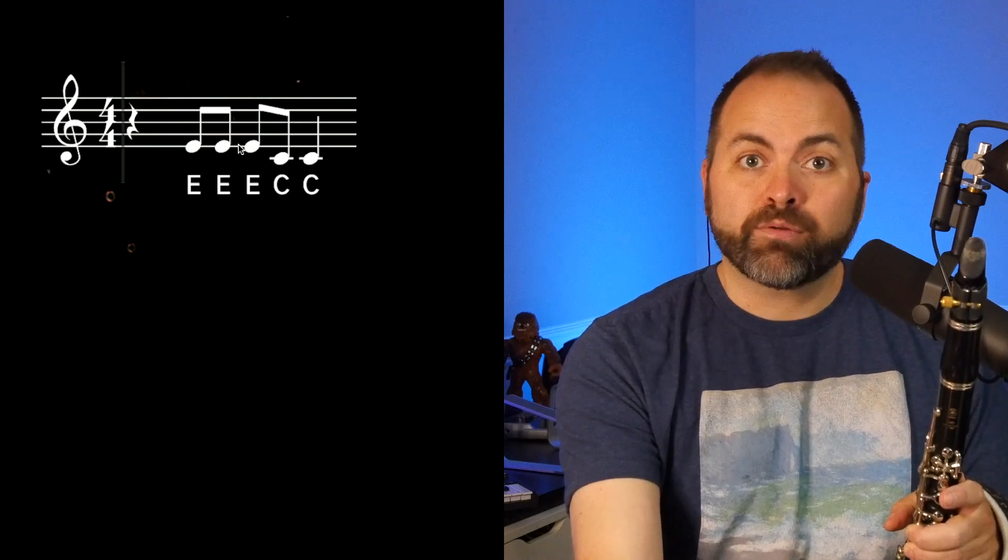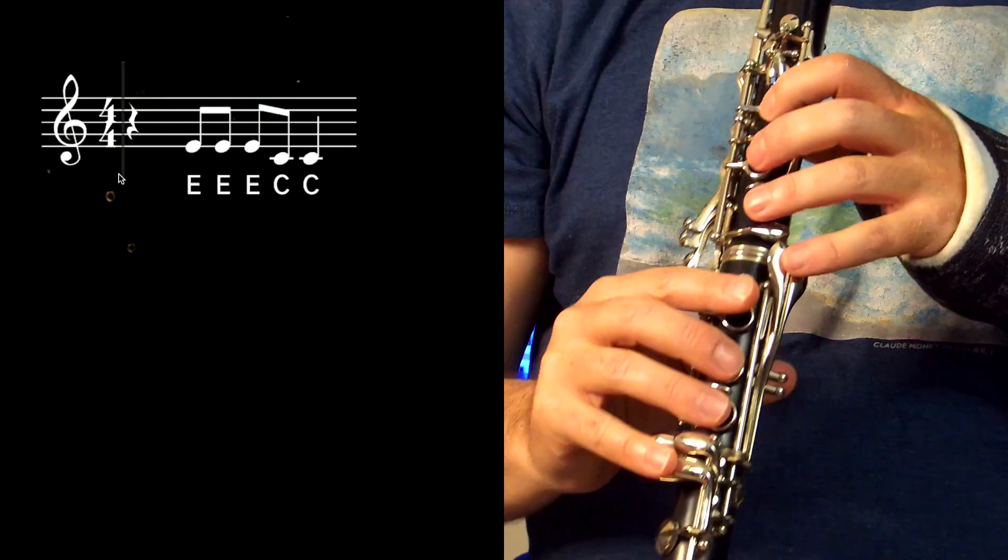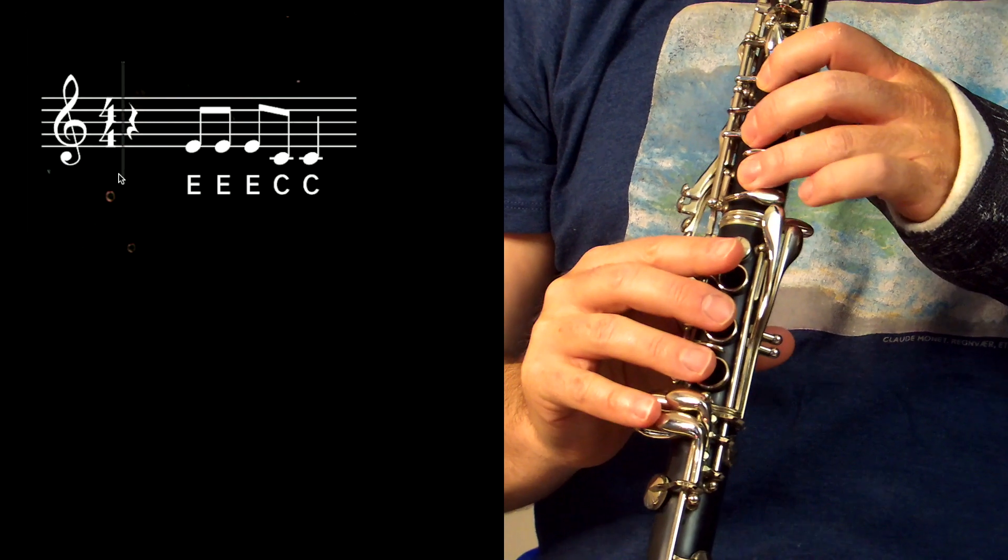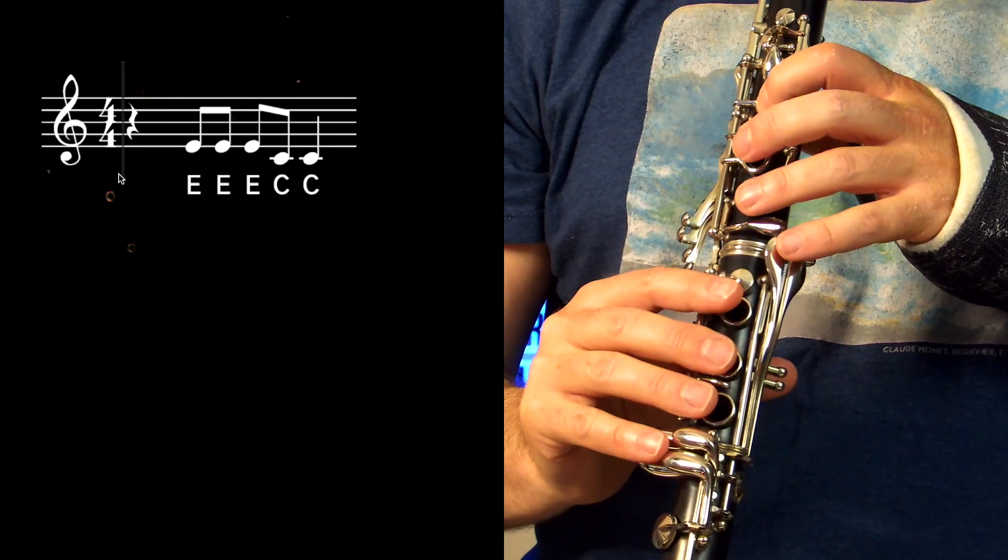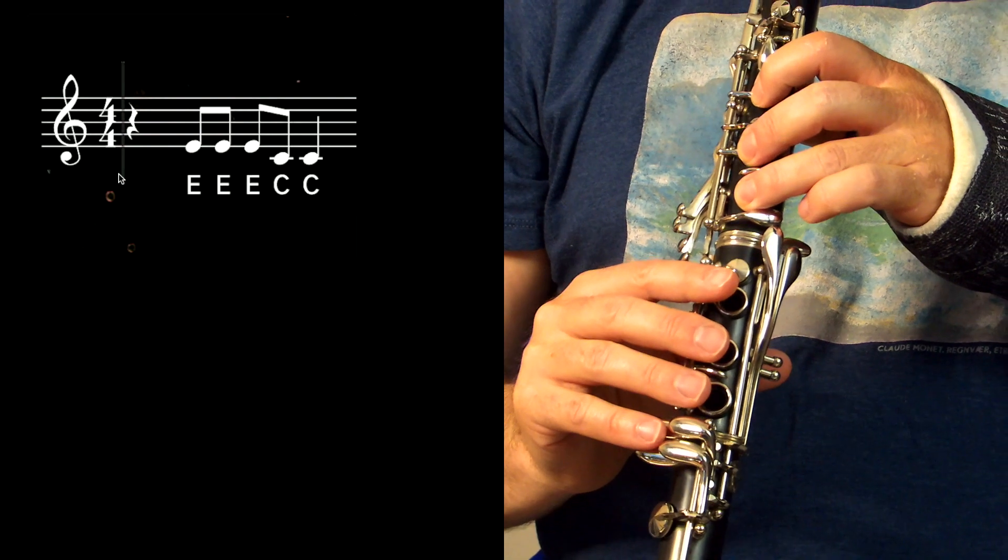So we're going to take it phrase by phrase. Let's look at measure one. We have a quarter note rest, which means you don't play, and then we have E, E, E, E, C, C. Let me play it for you. If you need to play it a little bit slower, you can. So that's the first part of the beginning of the song.